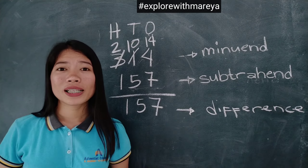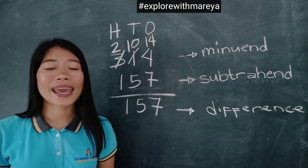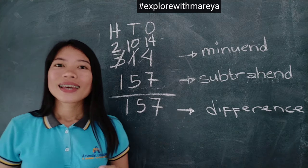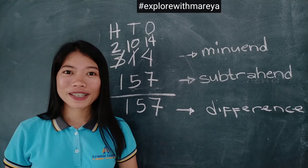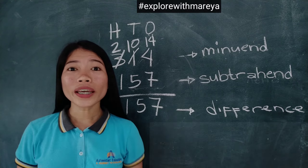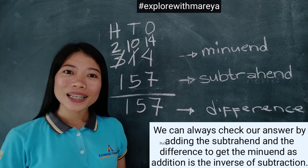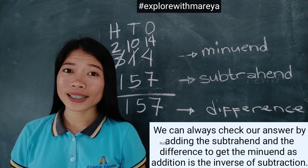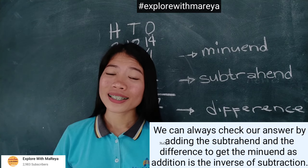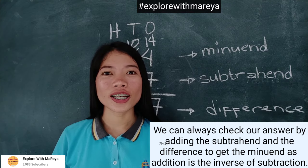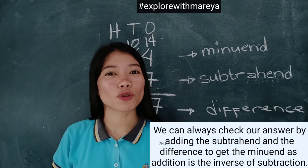Hence, the difference between 314 and 157 is 157. We can always check our answer by adding the subtrahend and the difference to get the minuend, as addition is the inverse of subtraction.